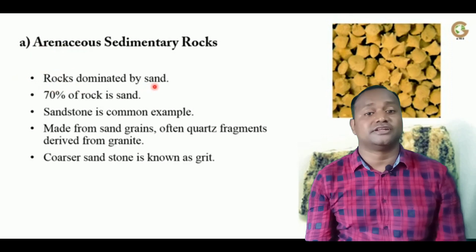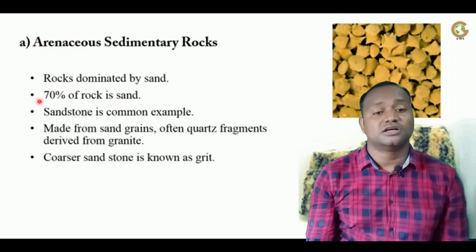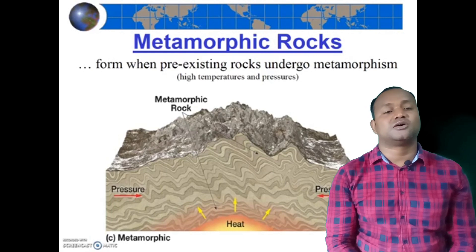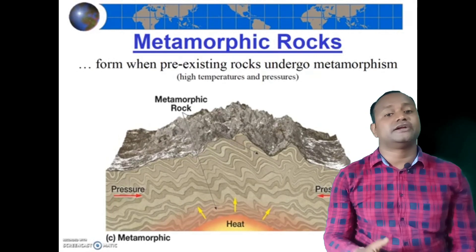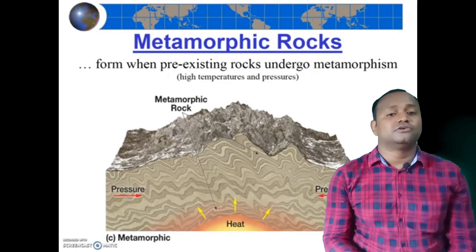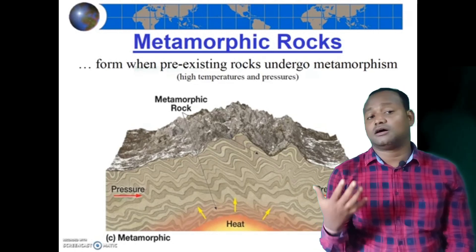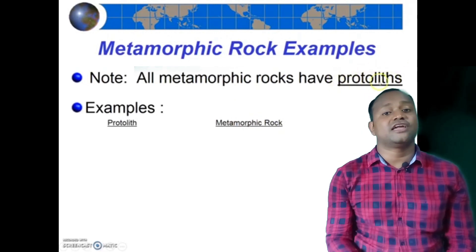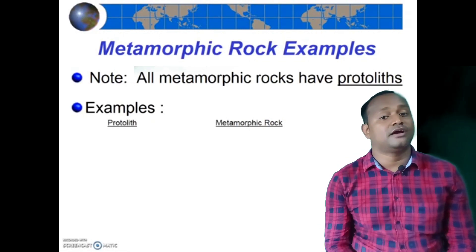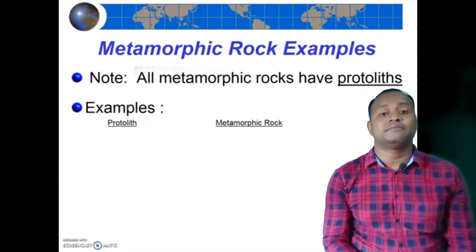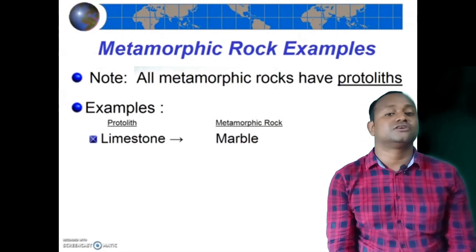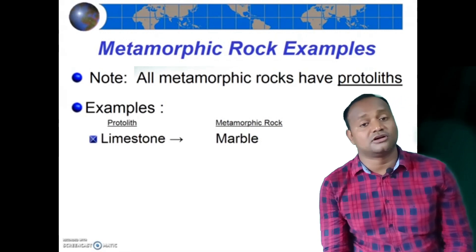Next, let's discuss about metamorphic rock. The word 'metamorphic' is derived from the Greek word 'metamorphose'. These rocks are mostly formed due to intense heat and pressure on different types of rocks. For example, due to high pressure and temperature, sedimentary rocks are converted into metamorphic rocks, and igneous rocks are also converted into metamorphic rocks.